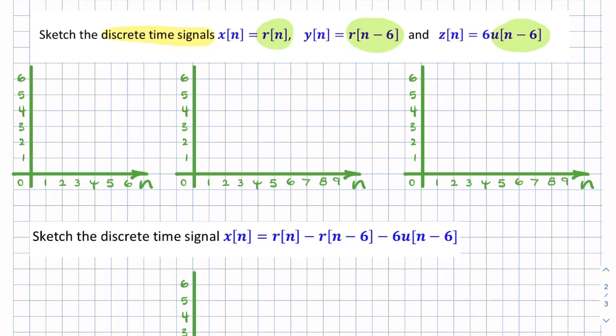Because they're discrete time signals, we have the independent variable n rather than t, and that's an integer. So I've prepared the axis here. So a unit ramp, you might think that just looks like that.